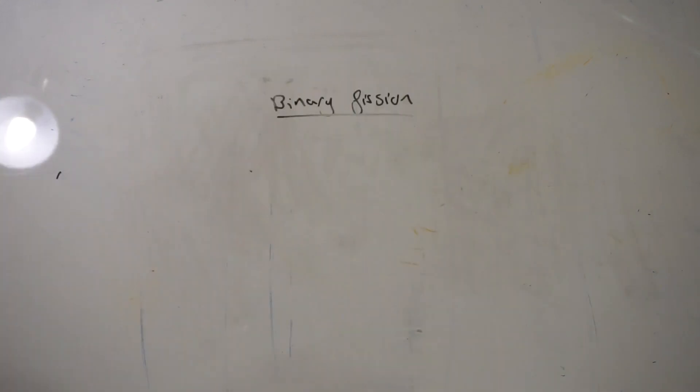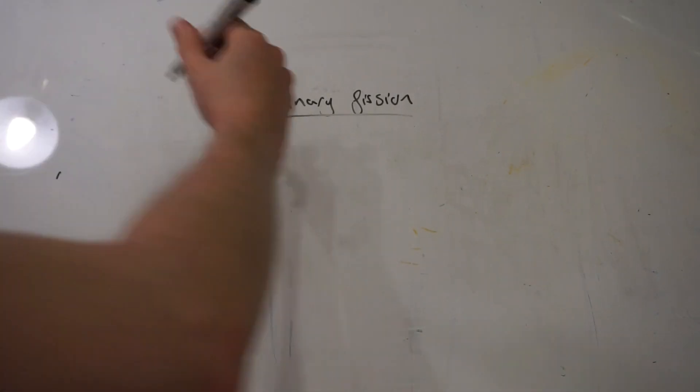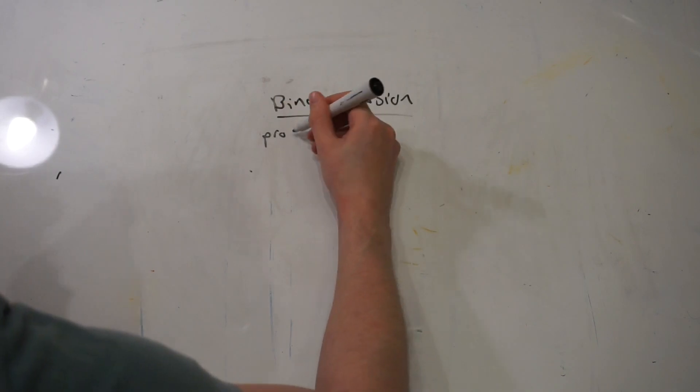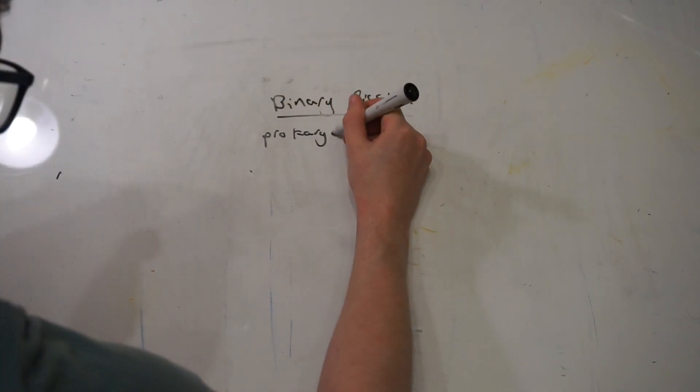Prokaryotic cells can reproduce using a simple type of subdivision, which we call binary fission. This is used by prokaryotic cells, not eukaryotic cells.